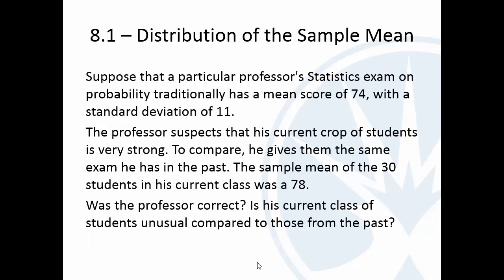All right, let's do another example. So let's suppose that a test typically has a mean score of 74 with a standard deviation of 11, and let's suppose that a professor suspects that the current group of students is very strong, so he gives them the same exam he's done in the past. The sample mean of those 30 students is 78, so a lot higher. The mean score is supposed to be 74, and so now this mean score is 78. The question is, is this current class unusual? Could 78 just happen randomly? Is that not that big of a deal? Or is getting a mean of 78 or higher pretty rare if it's supposed to be a mean of 74?